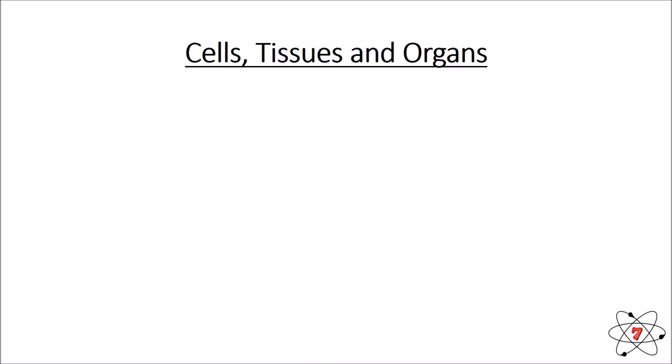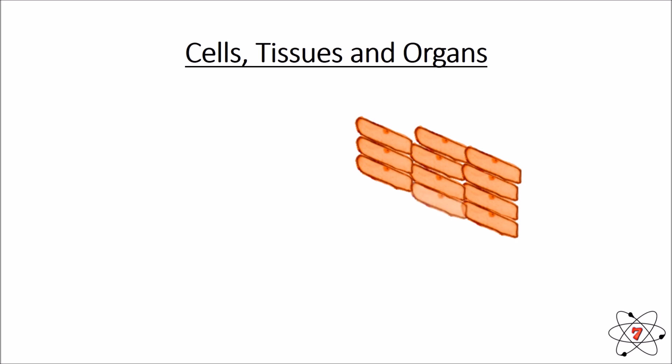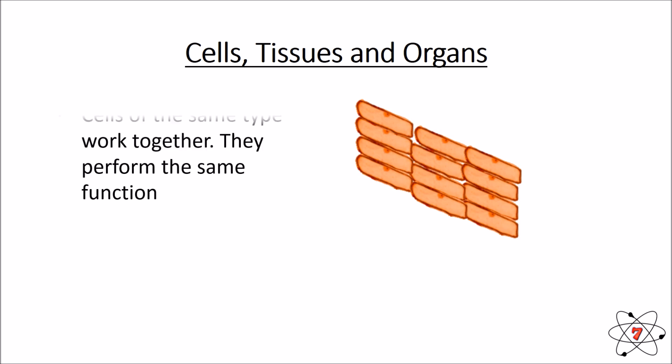If we take one cell — any cell at all — it has all of the features that we'd expect. This is an onion skin cell, so it's got a nucleus, a cytoplasm, a cell wall, a cell membrane, and a sap vacuole. It is a very, very basic cell.